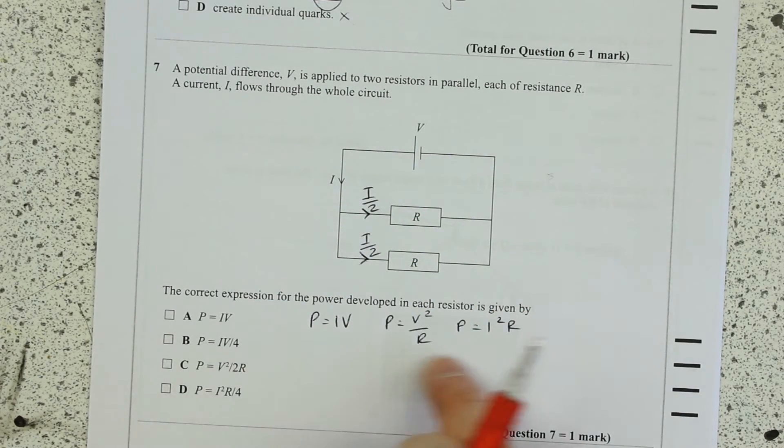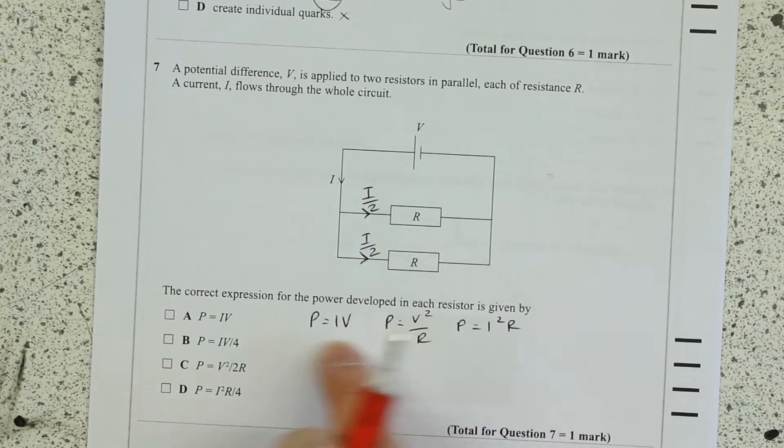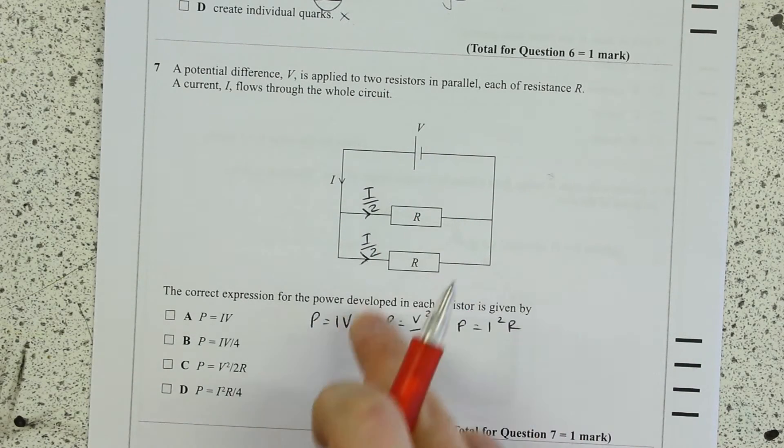Kirchhoff's laws then sub in Ohm's law to the power law, all these are given to you anyway. So which one is it going to be?